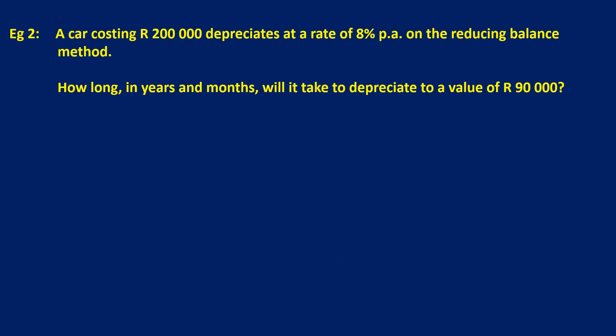Let's look at example two. And in this example, a car costing 200,000 rand depreciates at a rate of 8% per annum on a reducing balance method. How long in years and months will it take to depreciate to a value of 90,000 rand? Our first question should definitely be which formula to use. We are looking at depreciation and on a reducing balance. So we're going to use the reducing balance depreciation formula, which does appear on your formula sheet.